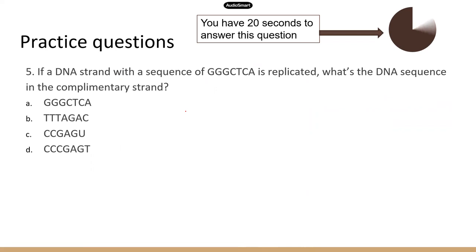Next question. So this question is about figuring out the sequence of the complementary strand when you are given a template strand. So this is the template strand sequence, and you just need to do base pairing. So G pairs with a C, T pairs with a A. So which one's correct? CCCGAGT. So D is the correct answer.